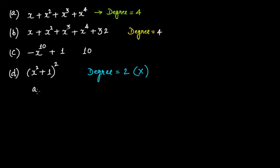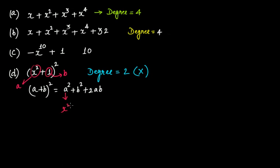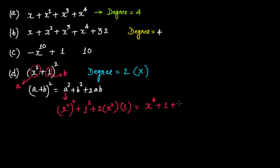To understand why, note it is of the form (a + b) whole squared. Using the identity (a + b)² = a² + b² + 2ab, with a = x² and b = 1, we get (x²)² plus 1 squared plus 2 times x squared times 1. This simplifies to x raised to the power of 4 plus 1 plus 2x squared, or rearranged: x raised to the power of 4 plus 2x squared plus 1.